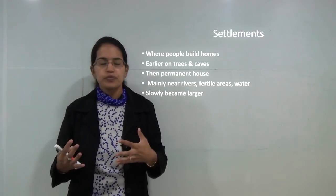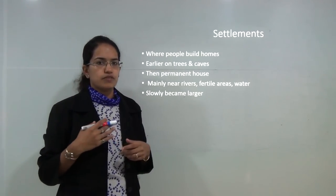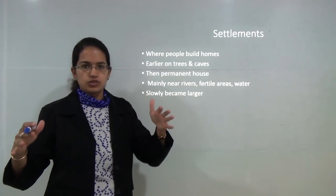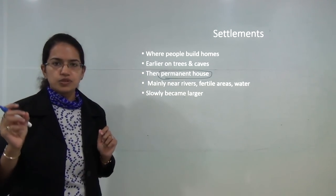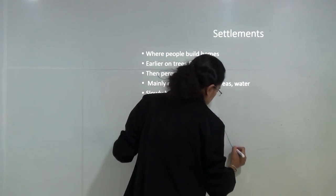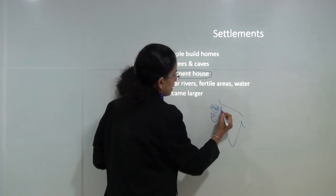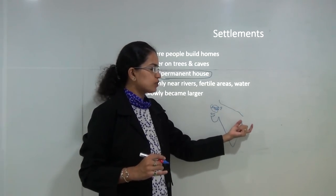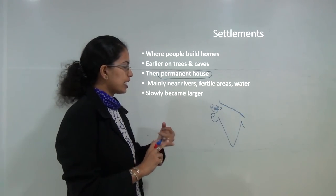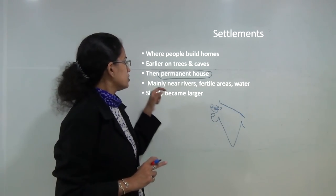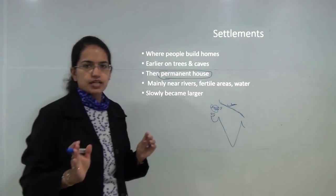Settlements are the places where people build homes. Previously, people used to live on trees or in caves, then started the trend for kachcha houses and finally pakka or permanent houses. Looking at the map of India, you have the Ganga river and the desert areas. People would more likely settle along the river because of agriculture and transportation, so rivers, fertile areas and water sources were the main areas where settlements started.